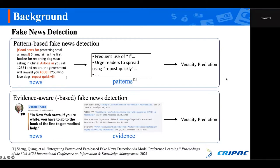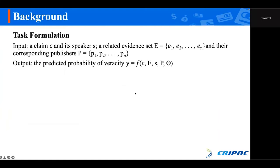So this is the broad view of the two pipelines of fake news detection. Now let me show you a specific task formulation. The input of this task is a claim and its speaker — that is, who made the claim — and also related evidence sets which contain pieces of evidence and their corresponding publishers such as a media outlet. The output of the model is a predicted probability of veracity.